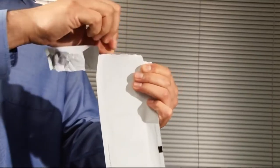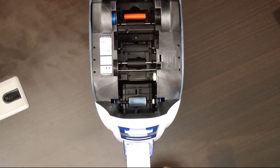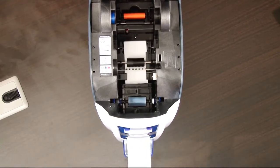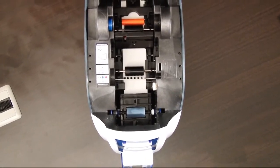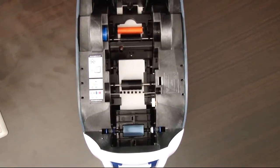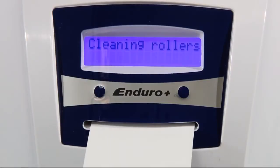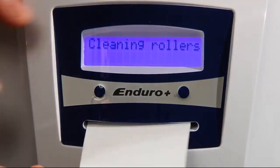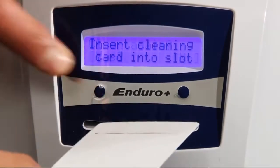Open the pouch containing the new cleaning card and remove the card. Select yes on the printer and insert the small end of the cleaning card into the slot on the front of the Enduro Plus. Flip the card and repeat this process at least two to four times in order to get everything really clean.